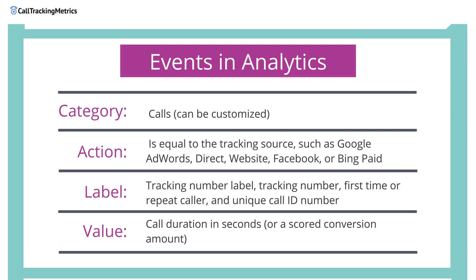The label is made of four parts. First is the label of the tracking number — if the tracking number isn't labeled it will report as not set. Next is the tracking number that was dialed, followed by whether or not this was a first time or repeat caller. Lastly, the unique call identification number.